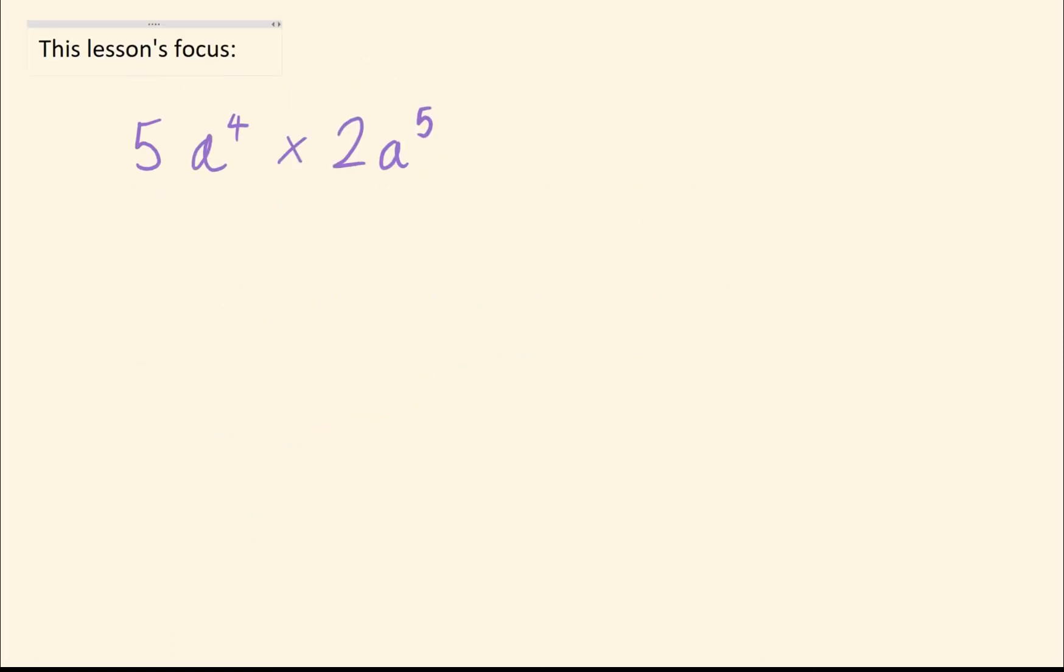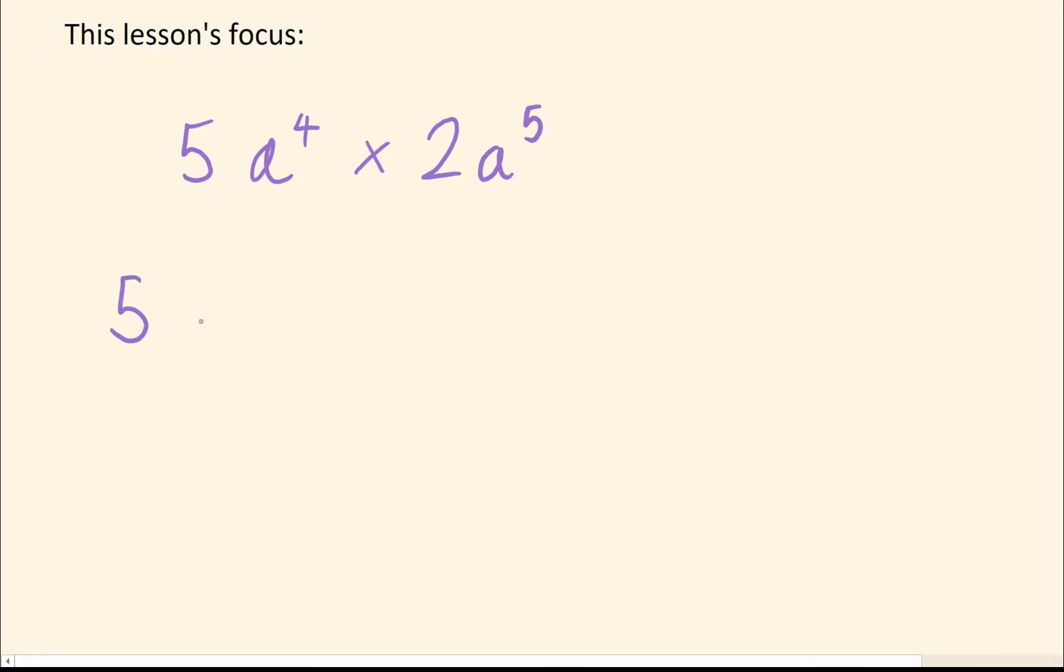So let's try that again. So in this question, let's try it the same way. We've got 5a to the 4, times 2a to the 5. I'm not going to write all these out, because I think it kind of makes it too easy almost. It doesn't really help to sort of learn the general rule.